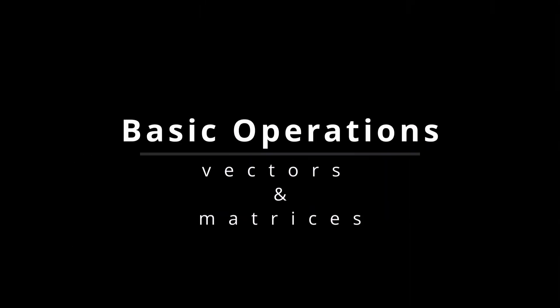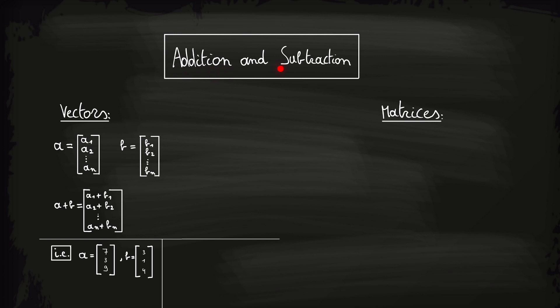Now, let's talk about basic vector and matrix operations. Let us start with addition and subtraction. Adding and subtracting two vectors is fairly straightforward. The process involves combining the corresponding components of the vectors. Let's say you have two vectors, a and b, each with n components. The sum of vectors a and b, denoted as a plus b, is calculated by adding their corresponding components.